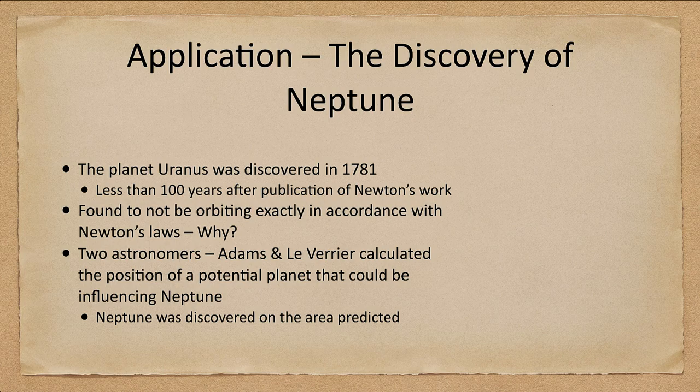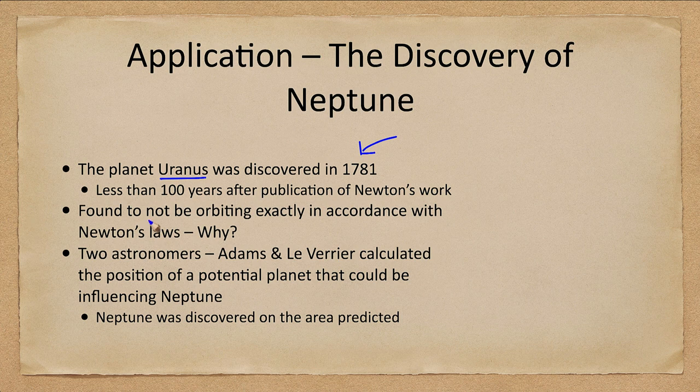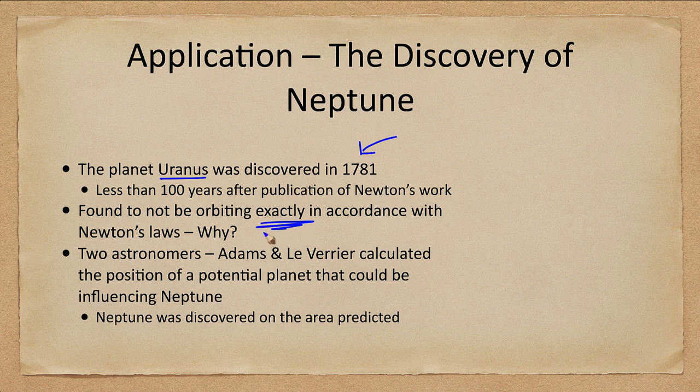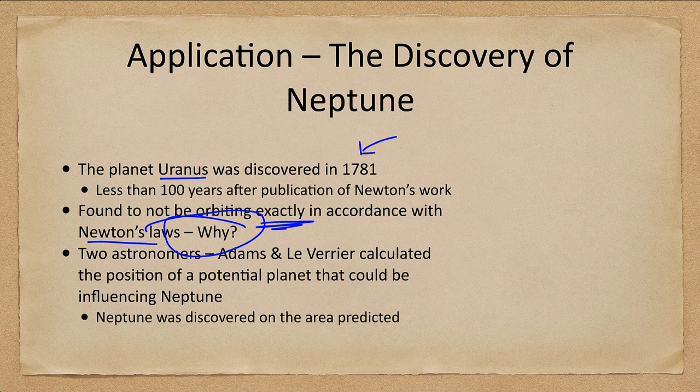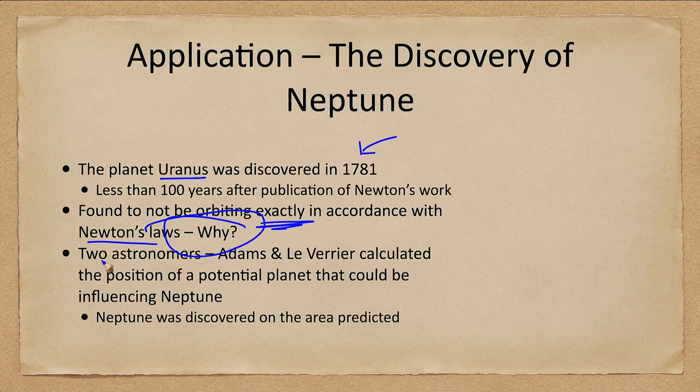So let's see how this could have been used and how it was used. Uranus, the first planet to be discovered, was discovered in 1781. This is less than a century after Newton published his work on gravity. As we tracked its orbit, we found that it was not orbiting exactly in accordance with Newton's laws. Big question is why? Why was it wrong? Did Newton's laws not apply that far out in the solar system?